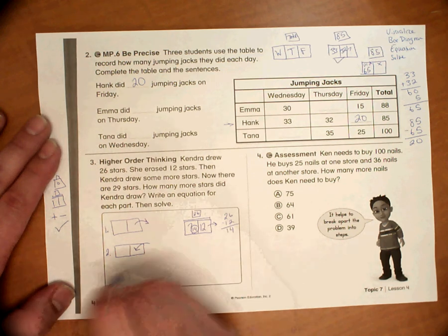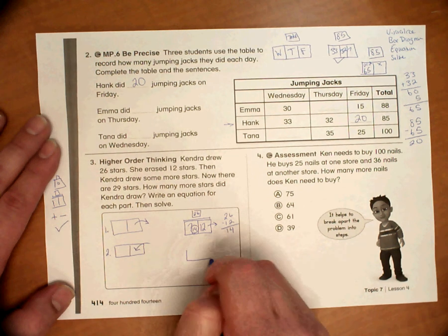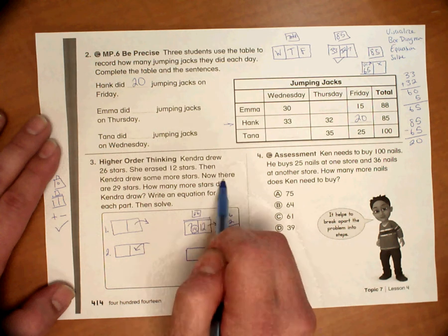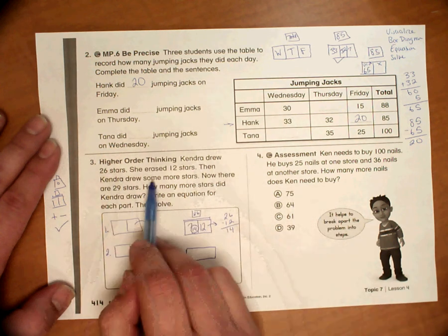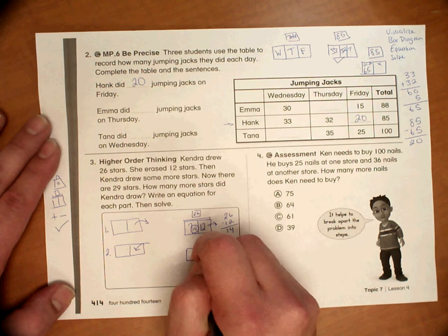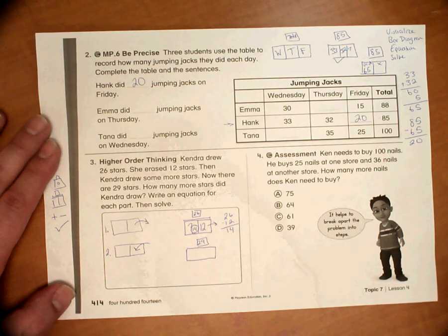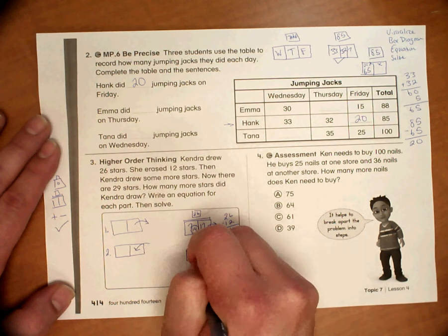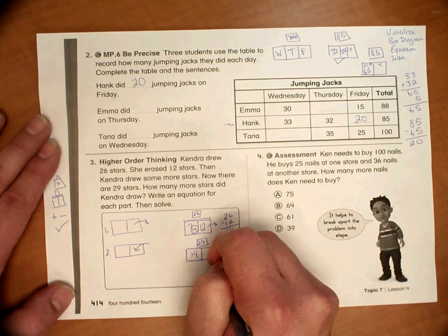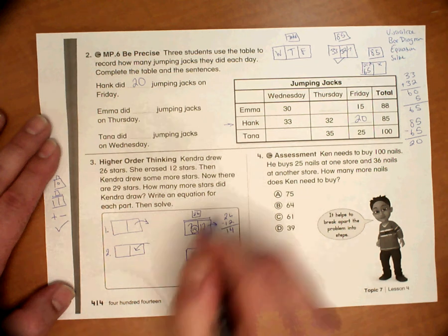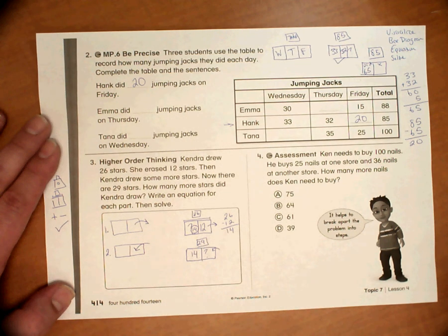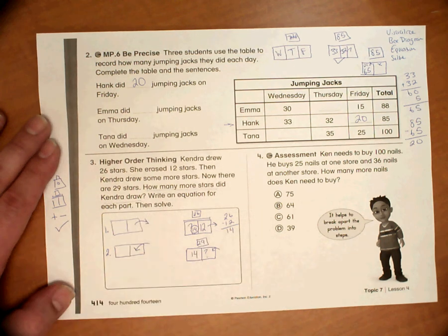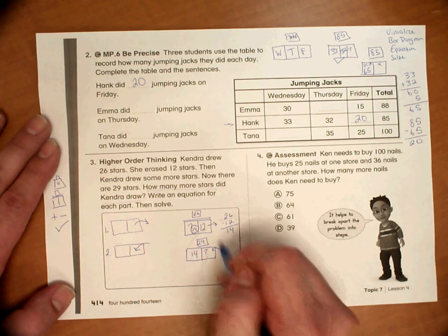So now the next part. It says now there are 29 stars after she drew some more stars. So total, we're going to have 29. She started with 14. And she's going to draw some more. We don't know how many she drew. And that's the question. How many more stars did Kendra draw? So here's our bar diagram.